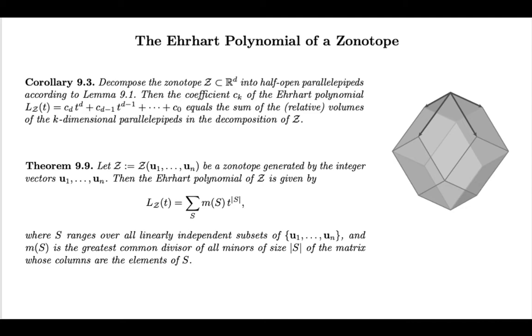This is computationally appealing because if you have a zonotope like the one on the right that you can see here, let's say generated by four vectors in three-dimensional space, what we're saying now is that you first compute the determinant of all three-by-three matrices given by three of those generators, they will be linearly independent, and that will be the leading coefficient.